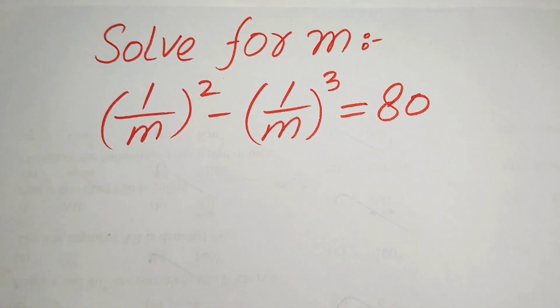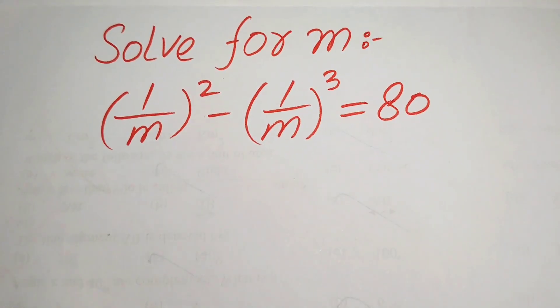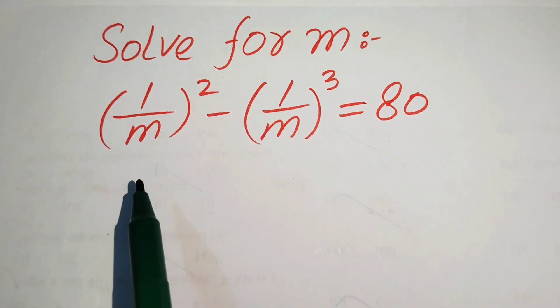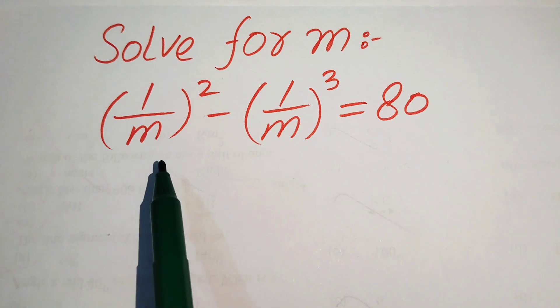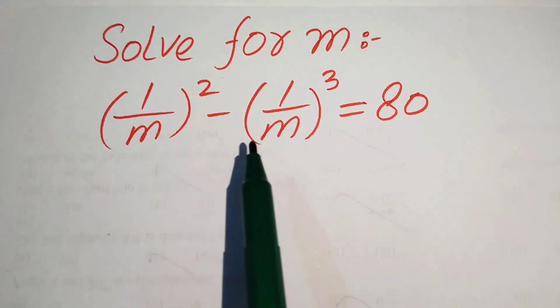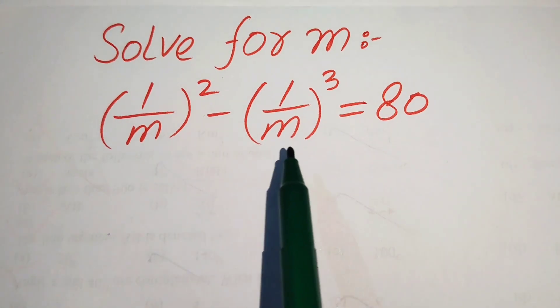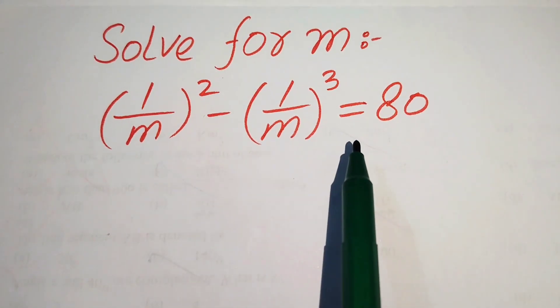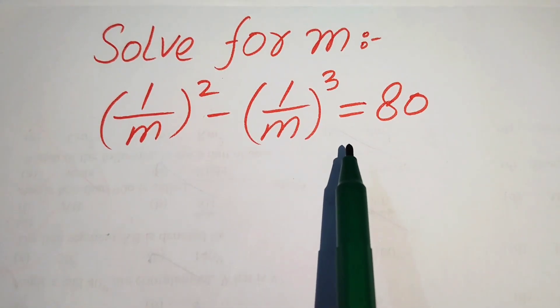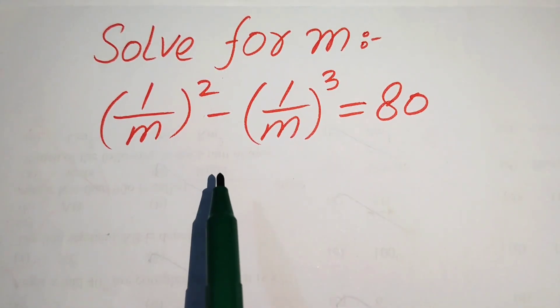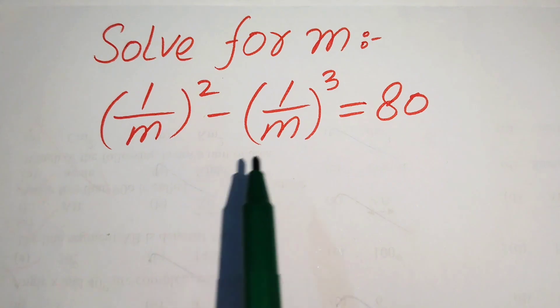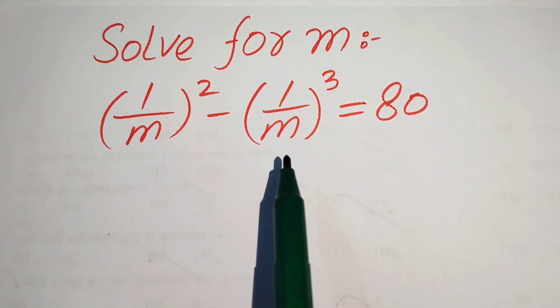Hello everyone, welcome. We are going to solve this math Olympiad algebra problem. Here we have 1/m whole squared minus 1/m whole cubed equals 80, and we solve this problem for the value of m.